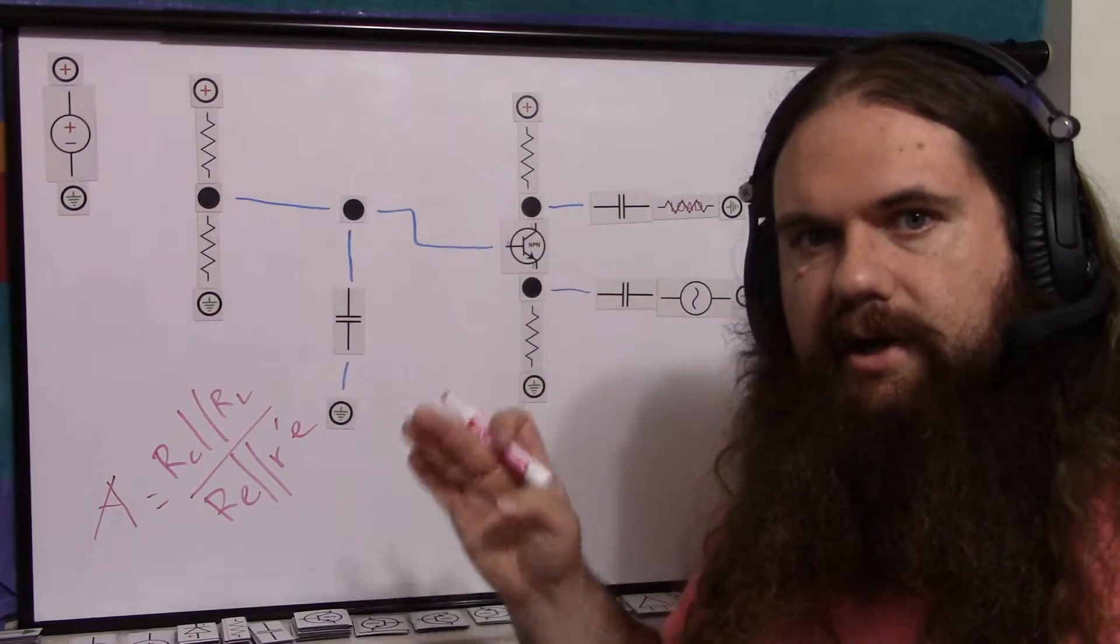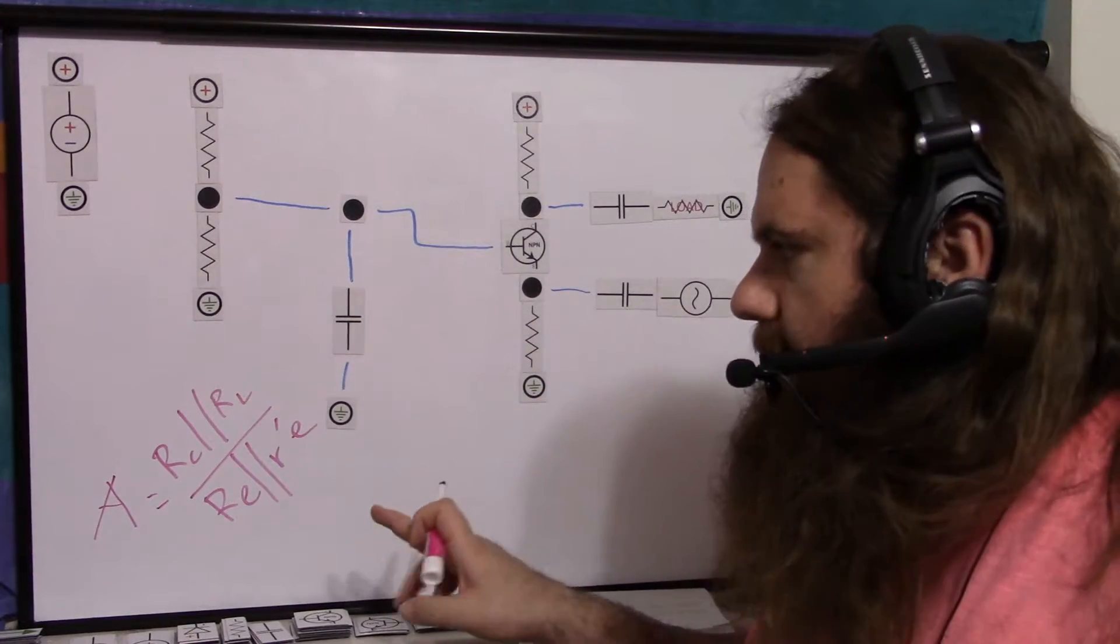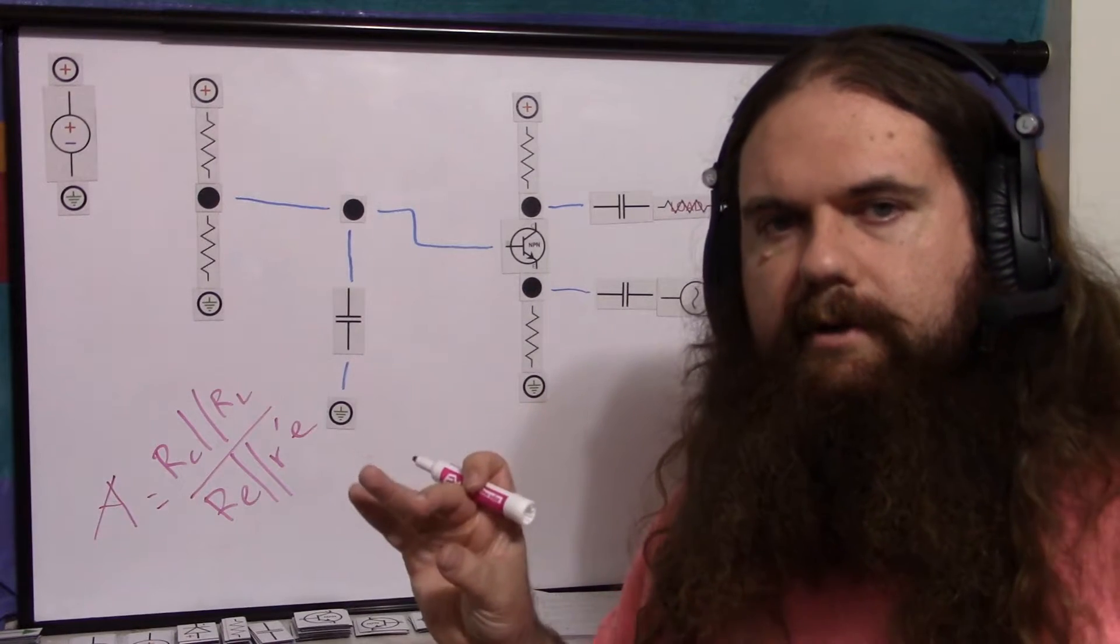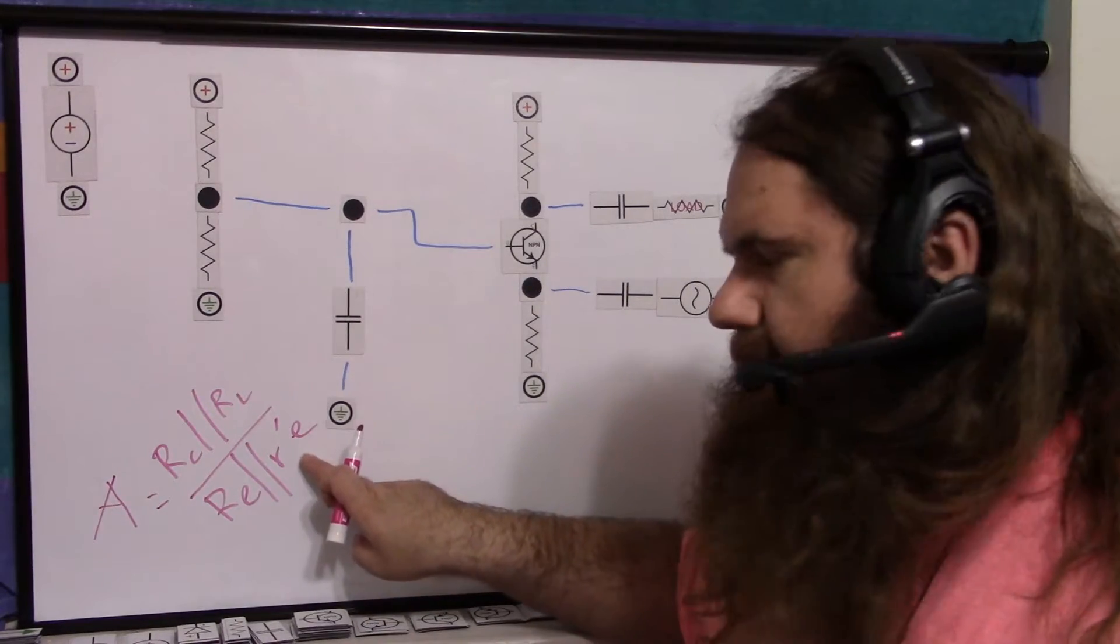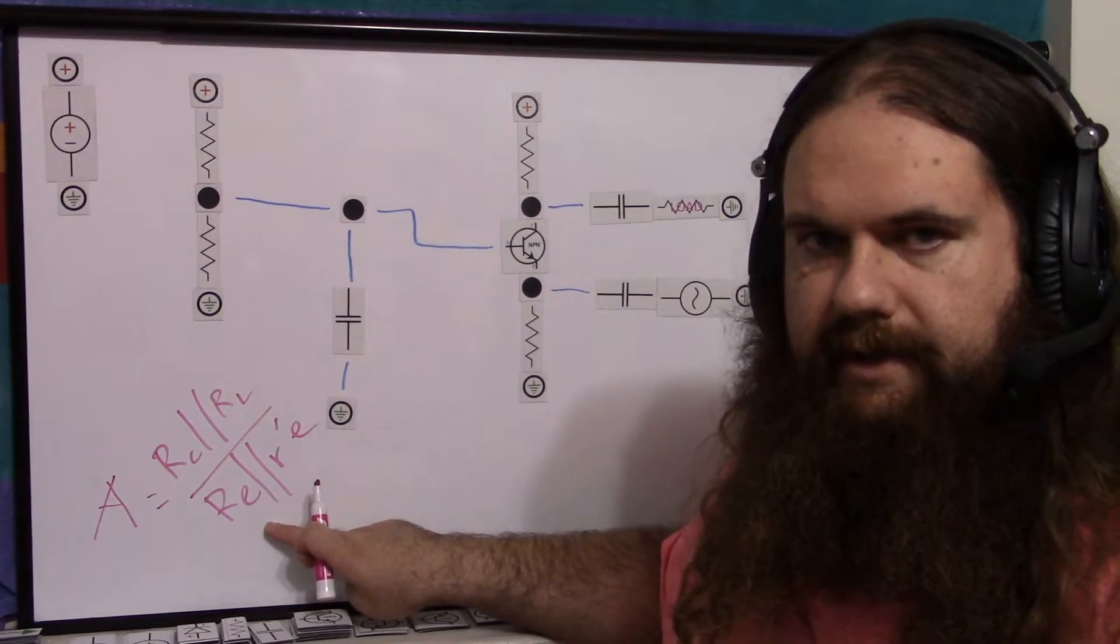So if your current is changing a lot, that resistance is changing a lot, that effective resistance, dynamic emitter resistance, and so your gain is changing a lot, and that is signal distortion. So this is another illustration of why small signals work better, so that this r'e does not change too terribly much.